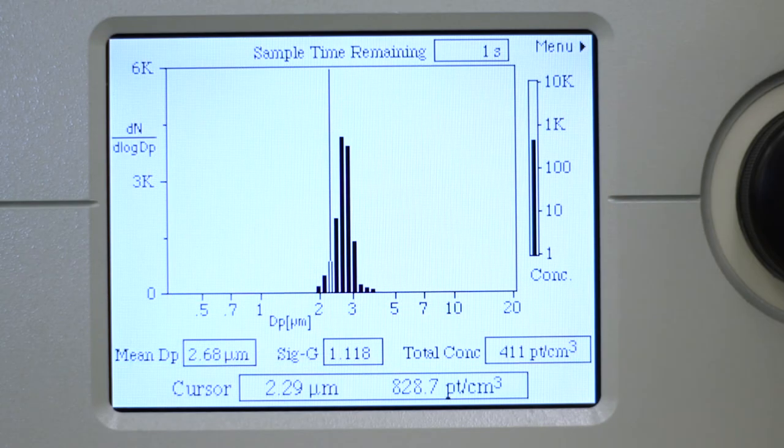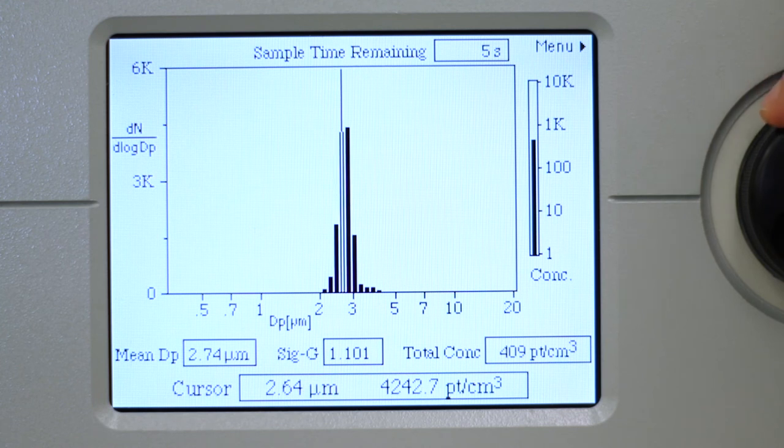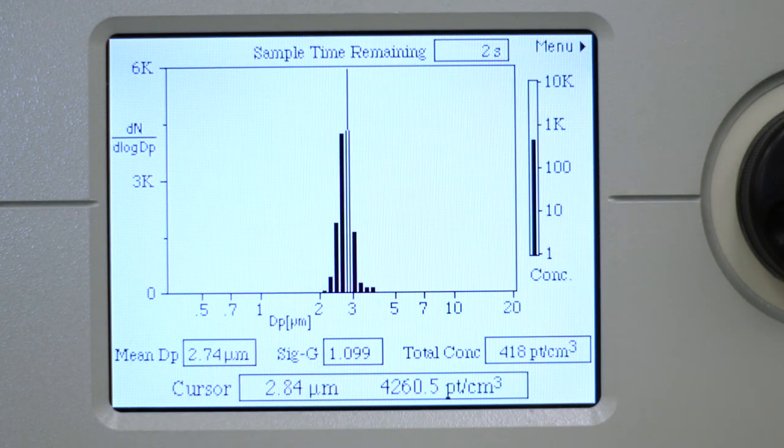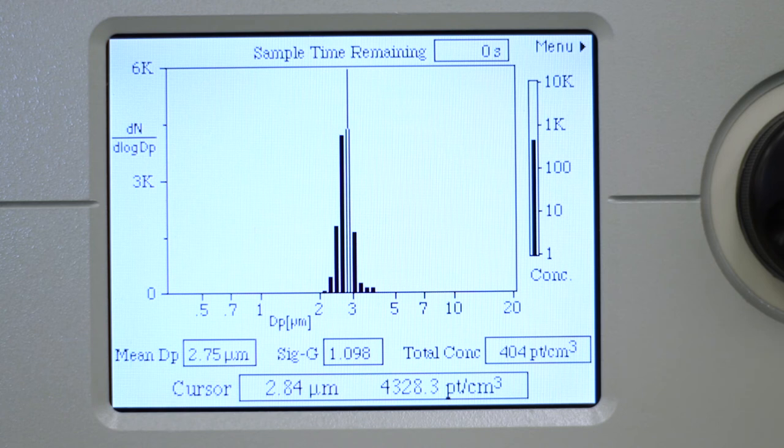If we turn our attention to the aerodynamic particle sizer, we can see that our particle size distribution has shifted to the right. Instead of 2.3 microns, we are now around 2.8 microns.